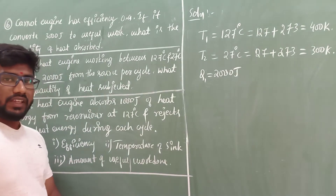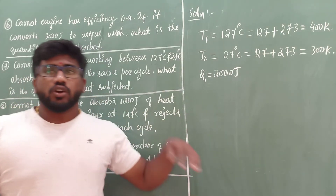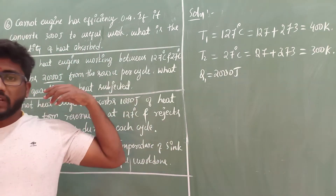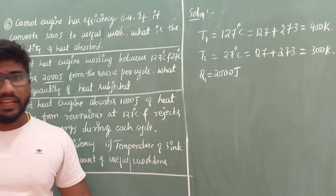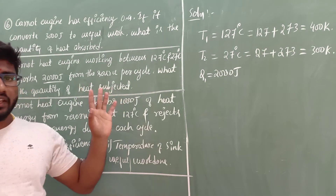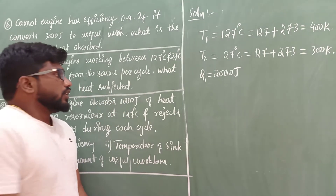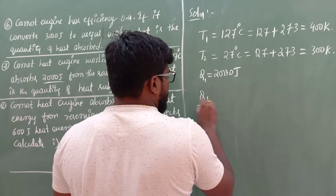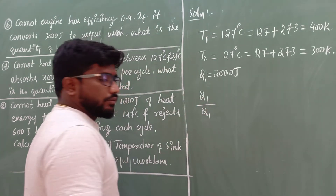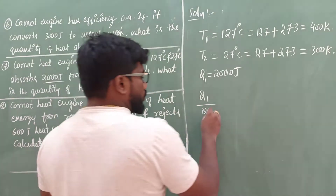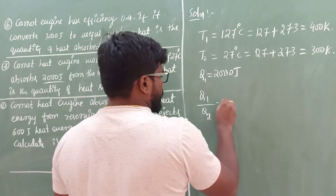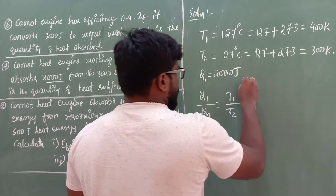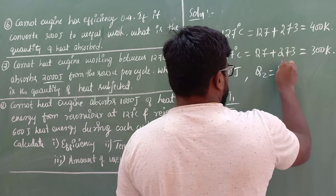The question states Q1 equals 2000 Joules absorbed from the source per cycle. We need to find the amount of heat sent to the sink, that is Q2. The relation we use is Q1 divided by Q2 equals T1 divided by T2.